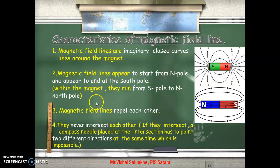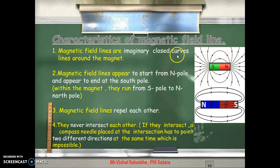Now let us see some characteristics of magnetic field lines. First, magnetic field lines are imaginary closed curve lines around the magnet. Second, magnetic field lines appear to start from the north pole and end at the south pole outside the magnet, as indicated by arrows. But within the magnet, the magnetic field lines go from south to north, so they continue their direction and form closed loops.